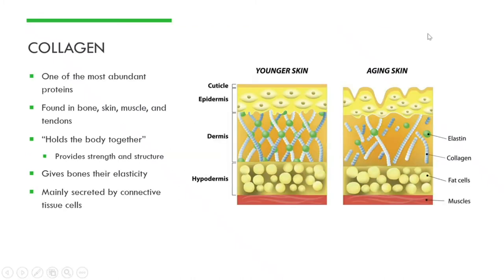A brief overview of collagen: it's one of the most abundant proteins in the body — roughly one-third of all proteins. It's found in bone, skin, muscle, and tendons, and its main function is holding the body together by providing strength and structure. It gives bone elasticity and is mainly secreted by connective tissue. Naturally, as the body gets older, we produce less collagen, as shown in this image comparing younger skin versus aging skin in terms of collagen present — and this is true for everywhere else in the body where collagen is found.